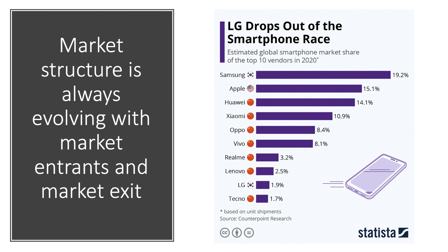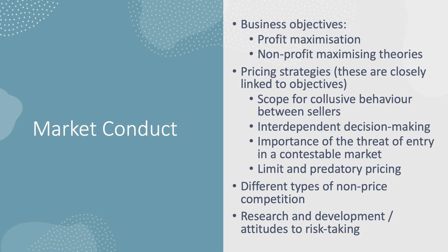For example, South Korean firm LG decided to leave the smartphone market to allocate resources away from manufacturing smartphones. In 2020 they had less than 2% of the market, which is dominated by Samsung, Apple, Huawei and others. So that was market structure, which leads on to market conduct.